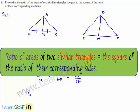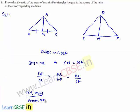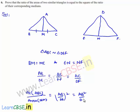Therefore, we can write: area of triangle ABC divided by area of triangle DEF equals the square of the ratio of corresponding sides, that is (AB/DE)², which can be written as AB²/DE².